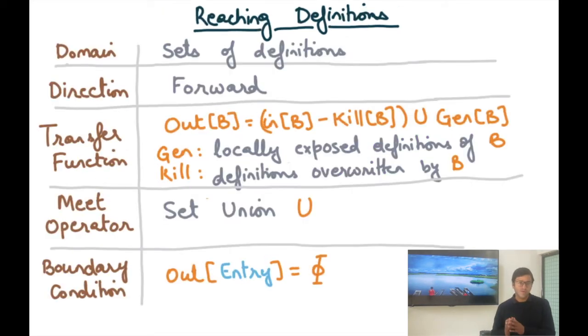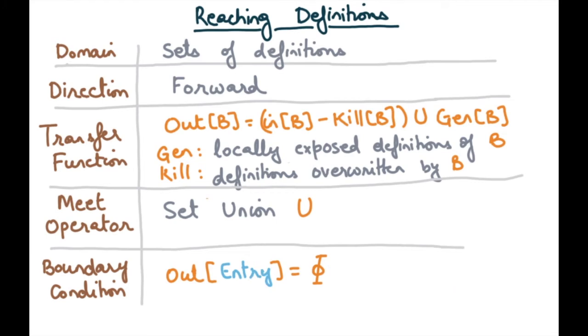And if I was to look at the data flow analysis for reaching definitions, the domain is basically the sets of definitions. For example, D1, D2, D3. Direction is forward. Transfer function: out B equals in B minus kill B union gen B, where kill is defined by statements that are overwriting an existing definition and gen is basically the new definition itself. So kill is definitions overwritten by B, gen is the locally exposed definitions of B. So definitions that have been made but have not been killed subsequently going in the forward direction. Meet operator is union because we are looking at any such path. So if there exists any such path we are going to consider it to reach. Boundary condition: out of entry equals the empty set.